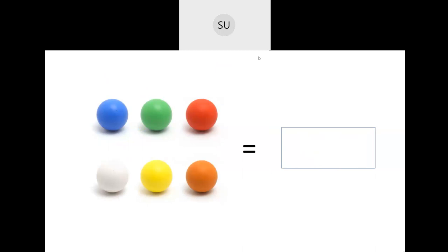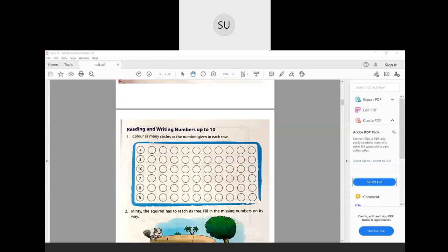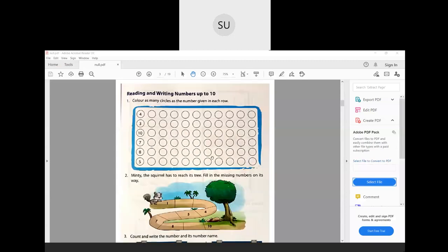So that covered: what are the numbers from 1 to 10, what is reverse order and reverse numbers, and also how to do counting. Now let's see a few questions in your textbook on page number 3.